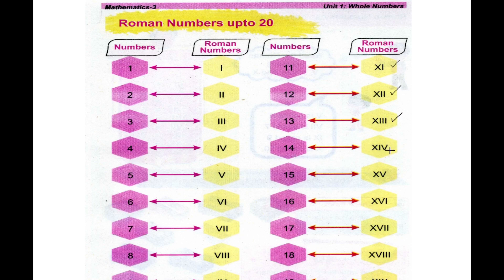XIV, we call it 14. XV, we call it 15. XVI, we call it 16. X with double I after V, XVII, we call it 17. X with triple I after V, XVIII, we call it 18. XIX, we count it 19. XX, we count it 20.